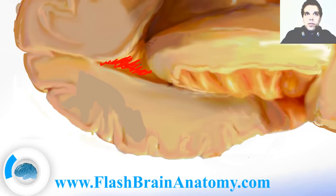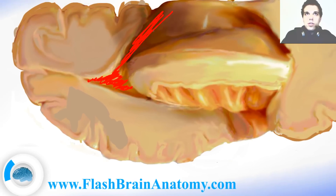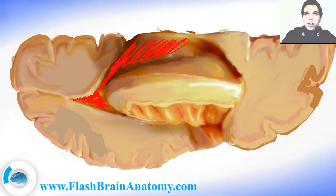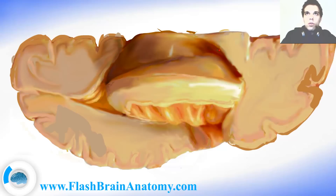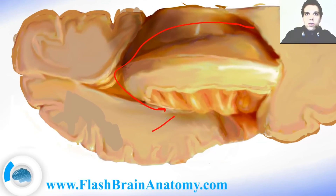This is the posterior horn of the lateral ventricle, and this over here is the cellamedia, and this over here is the anterior horn of the lateral ventricle. If we go all the way down there and under the insula we would be able to see the inferior horn of the lateral ventricle. This is the collateral trigone.